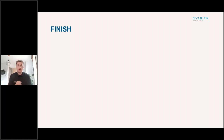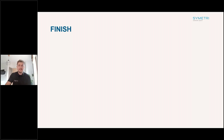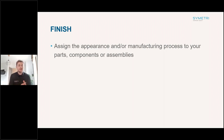The next tool is the Finish command, probably one of the bigger new features in this release. It allows you to assign an appearance to a particular face, and more importantly, the manufacturing process. You can assign a manufacturing process to a particular face, based on one of five categories. You can do that at part level, component level, and assembly level.